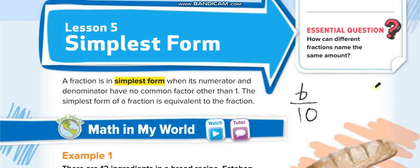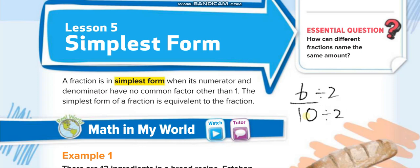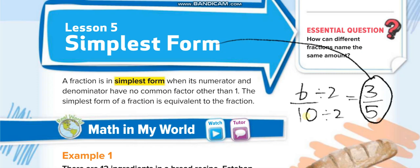The simplest form is always the shortest, smallest one. You have to divide with the same number up and down. Can you divide by 3? 6 divided by 3 is 2, but 10 divided by 3 is not possible. Let's choose 2: 6 divided by 2 is 3, and 10 divided by 2 is 5.